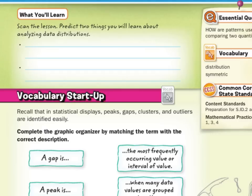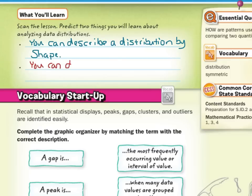they might be that you can describe a distribution by shape, and also that you can describe the center and spread of a distribution.